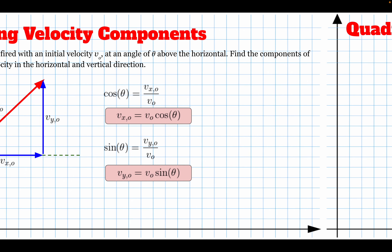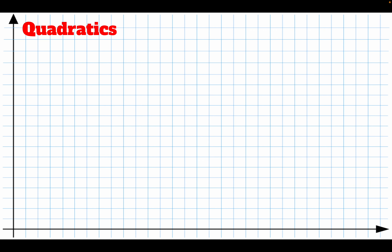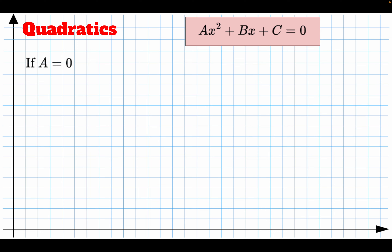The second thing we need is to talk about quadratics. Quadratics are second-order polynomials written as ax² + bx + c = 0. There's always the quadratic formula, but we don't always need it. If a is zero, the equation becomes linear: bx + c = 0, and x = −c/b directly. If b is zero, we have ax² + c = 0, so x² = −c/a and we just take the square root.